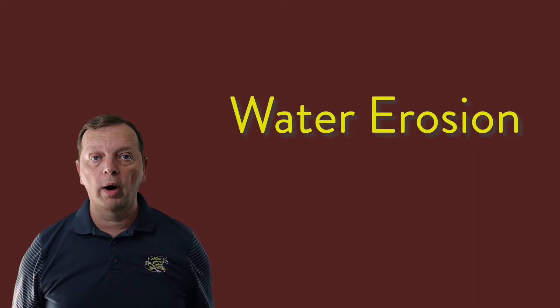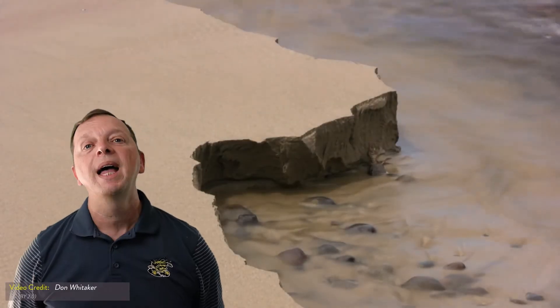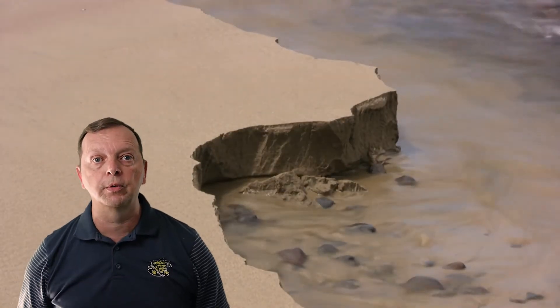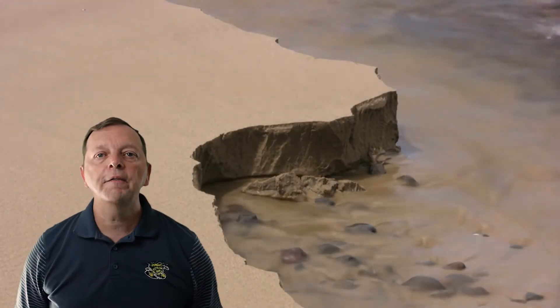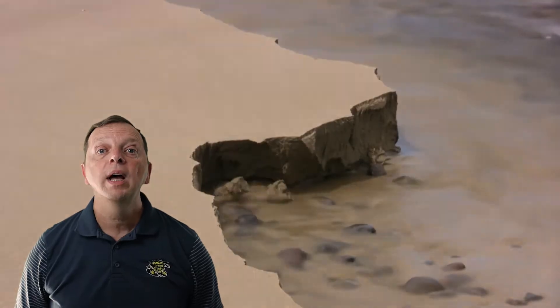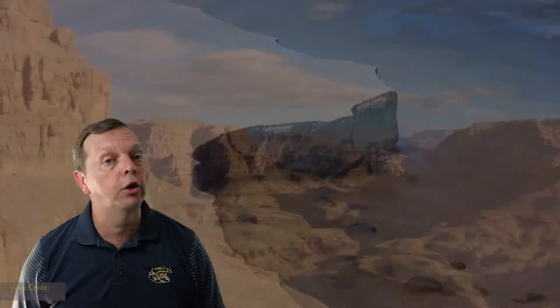Then we have water erosion. Ocean waves beating against the coastline will take sediment out to sea. This is an example of water erosion, as is the erosion we see with streams and rivers. If you doubt the power of water to erode, take a look at the Grand Canyon, which was formed by the erosion of the Colorado River. Through erosion, rivers will cut either canyons such as this one, or V-shaped valleys.